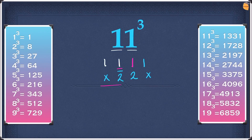Now add these numbers up. 1 plus nothing is going to be 1, 2 plus 1 is 3, 2 plus 1 is 3, and 1 plus nothing is also 1. So the answer is 1, 3, 3, 1 as you guys could see over here.